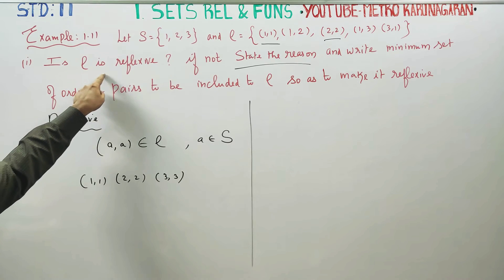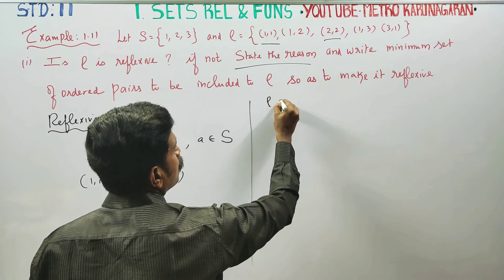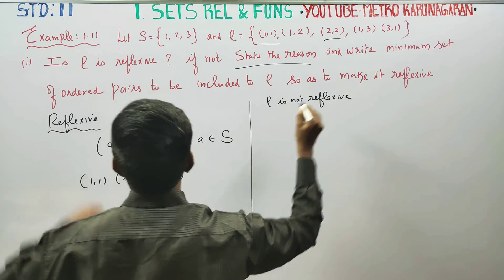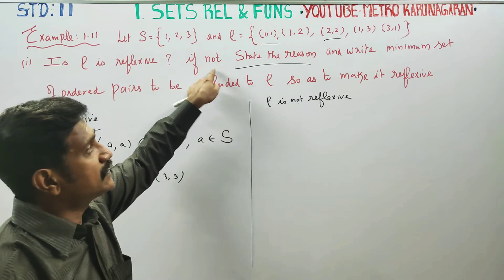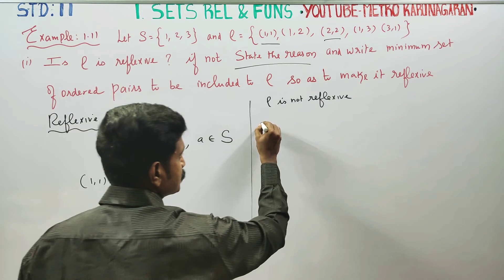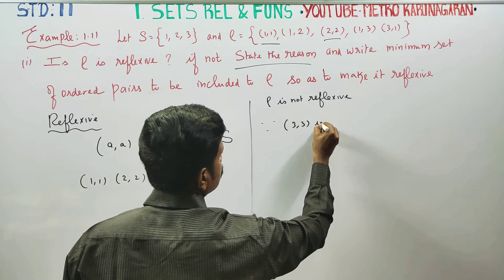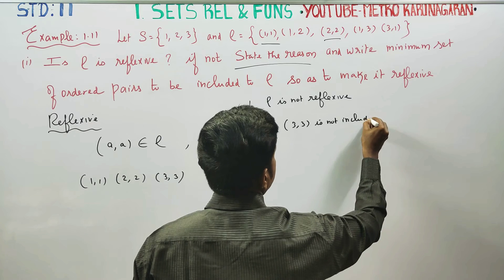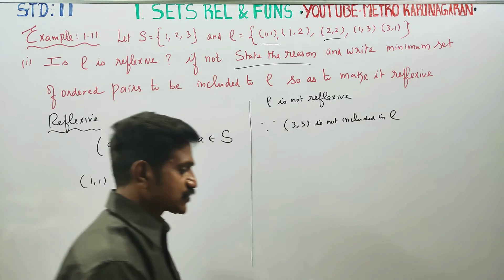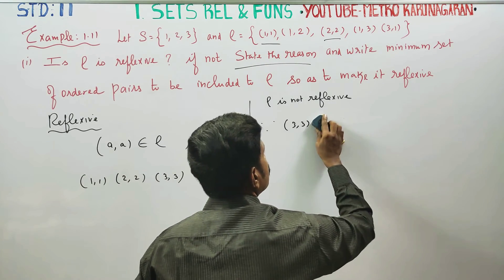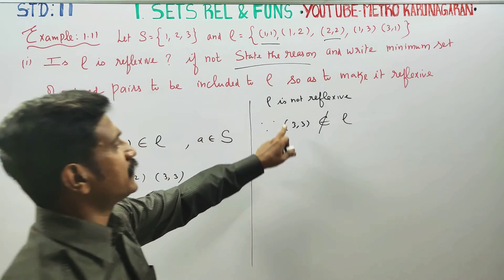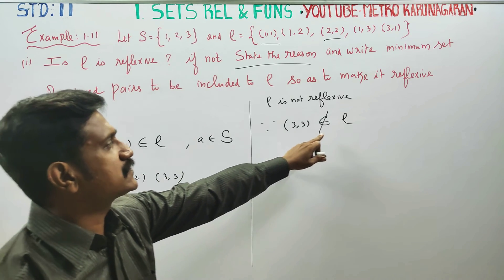Is Rho reflexive? First answer: Rho is not reflexive. Reason: because (3,3) is not included in Rho. (3,3) does not belong to Rho — (3,3) is not included.